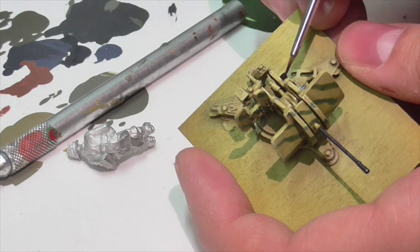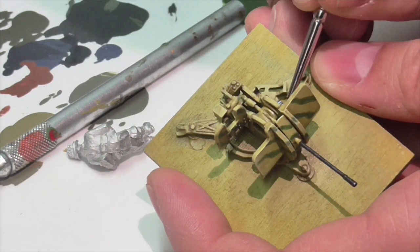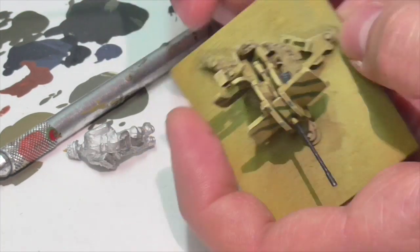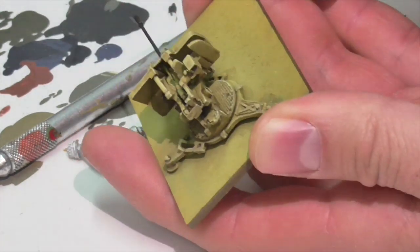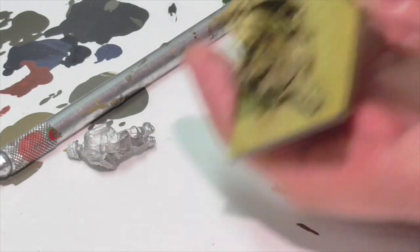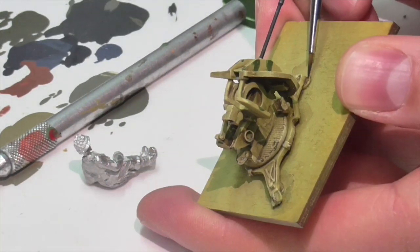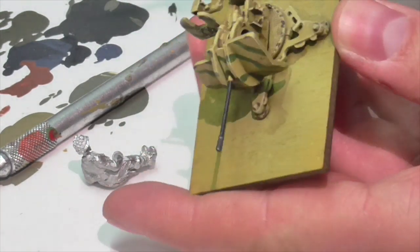Now it's time to add a little bit of chipping and dinging to the gun. And Jasper's using German camouflage black-brown as sort of his first chipping layer. And you want to put this basically in place where you'd expect the gun to be getting a lot of wear, like where the crew is stepping and standing on it a lot or touching it or it's getting banged or dinged against. In general, this is again, as we said before, chipping less is really more.